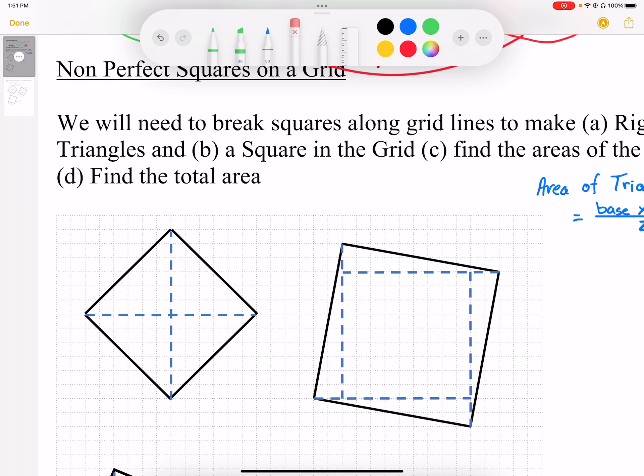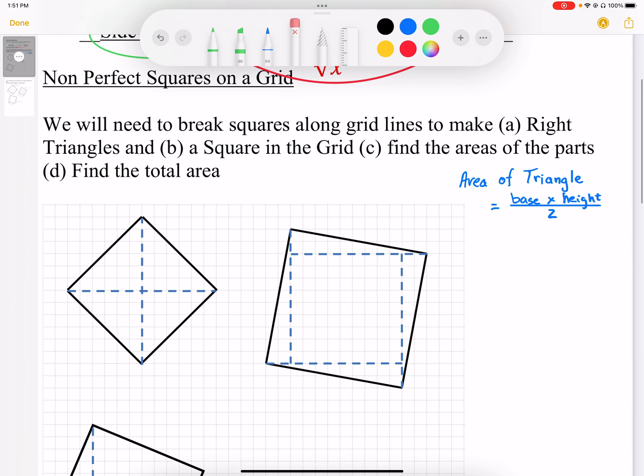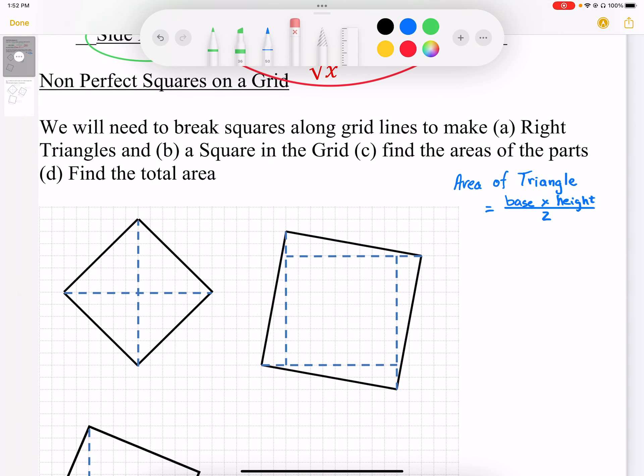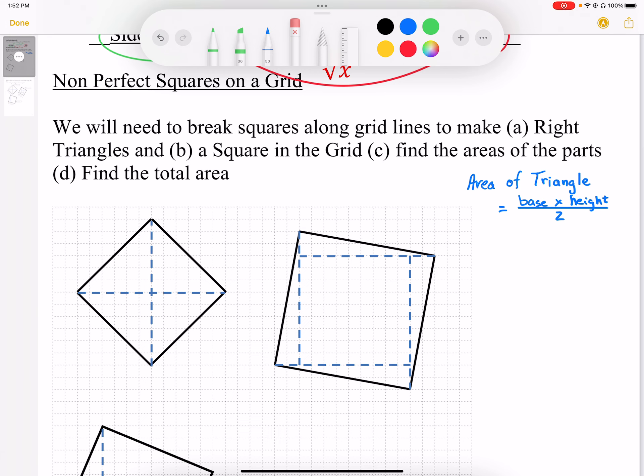The challenge is to find the area of that square. Once we have area, we can square root to find side length. So to find area of these squares, we first need to make sure we remember the area of a triangle. It's going to be base times height divided by 2.